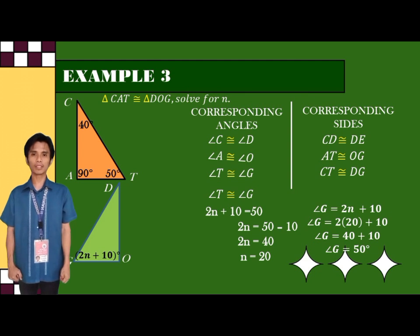And the result is angle G is equal to 50 degrees. And at that point, we already proved that angle G is congruent to angle T.